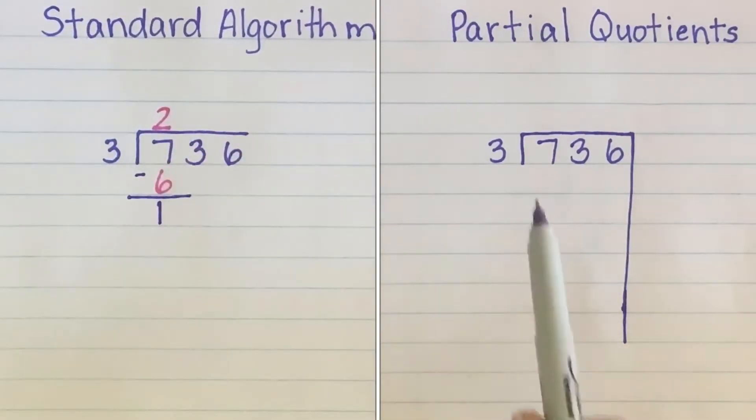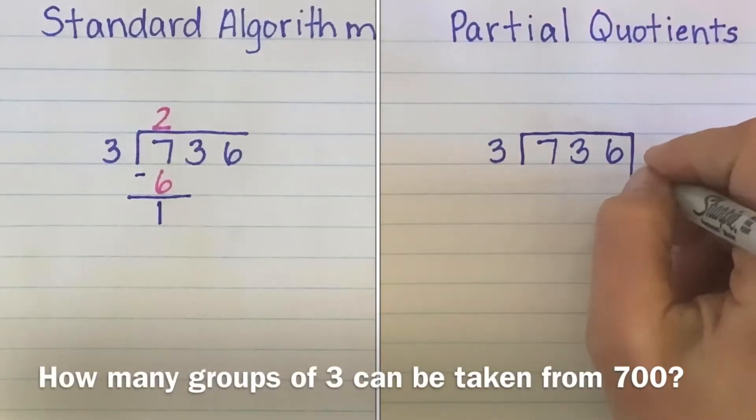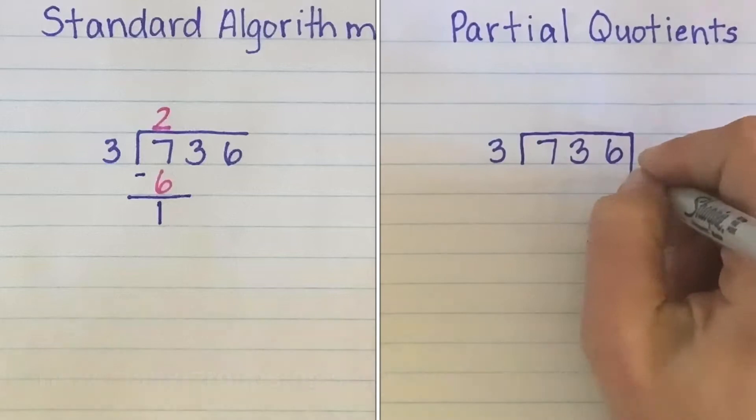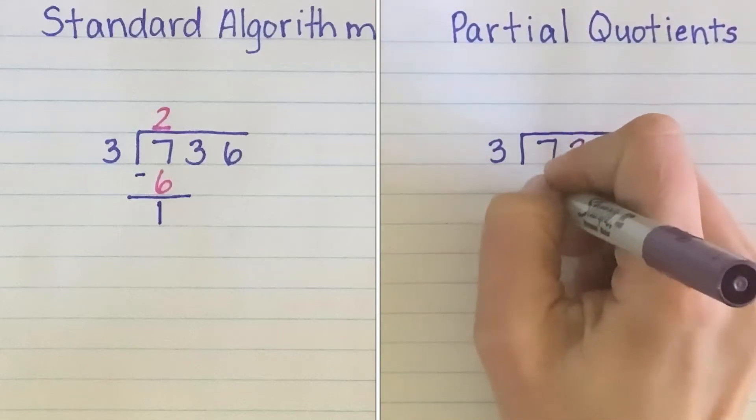On the partial quotients side, I'm asking the question, how many groups of 3 can be taken from 700? And we find that 200 groups of 3 is the largest amount of groups that can be taken from 700 without going over.